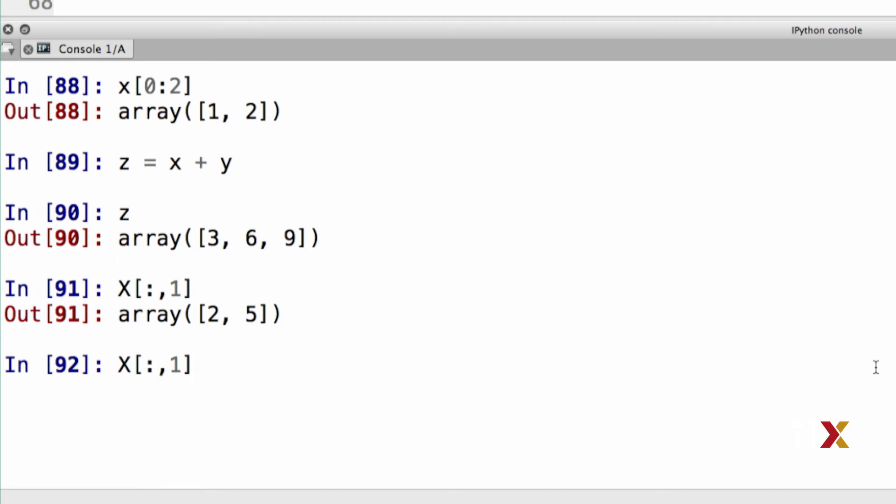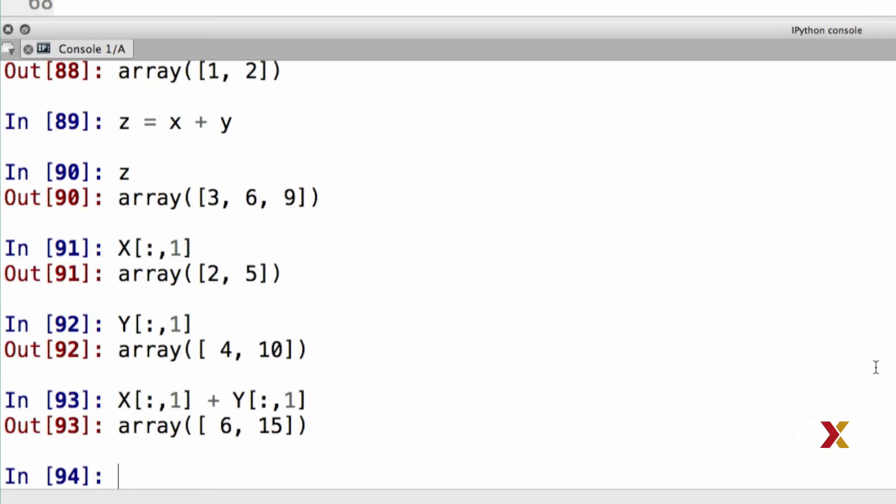I can do the same for y, and now I have the first column of the two-dimensional array y. I can also add these two up, so I can type x plus y, again colon comma 1. In this case, I've added together the first columns of these two arrays.